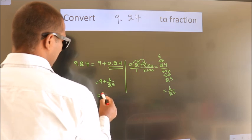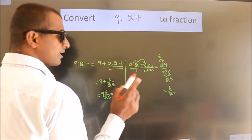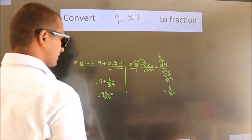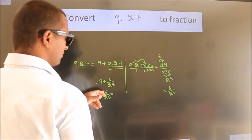In mixed fraction it is 9 and 6 over 25. And in improper fraction it is 9 into 25, which is 225 plus 6.